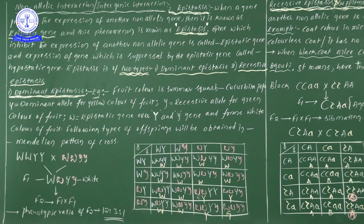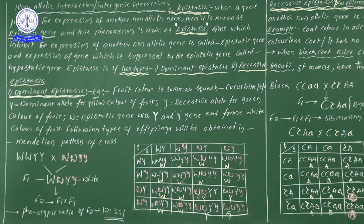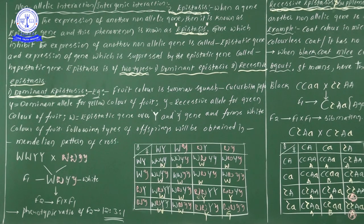Capital W forms white color of fruit. So even though capital Y (dominant) and small y (recessive) are present, capital W as the epistatic gene suppresses the expression of capital Y. An epistatic gene suppresses all kinds of non-allelic genes present beneath or behind it.